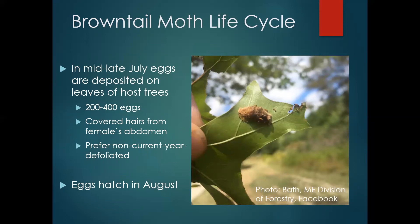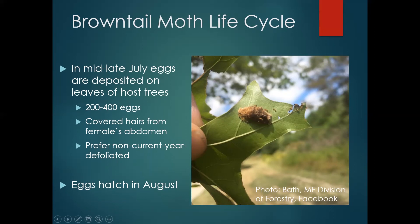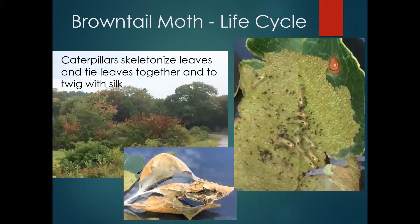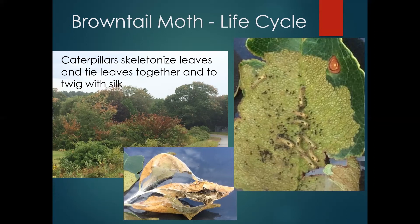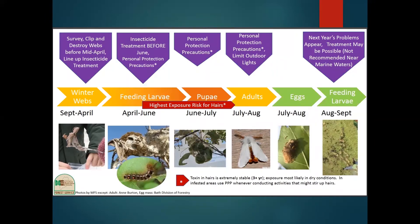Once the moths mate in July, the females will lay their eggs on the host foliage — each female can lay between 200 and 400 eggs in an egg mass. The female will cover them with hairs from her abdomen — again, not the toxic hairs you have to worry about. This is in August when these eggs hatch; you can see these little tiny caterpillars hatching out and crawling away from the egg mass. This happens in August and September. The very small caterpillars will feed communally, grazing on the outer surface of the leaf in a type of damage called skeletonization. At the same time they'll start communally building the winter web they will spend all winter in, feeding through August and through end of September and possibly into October.